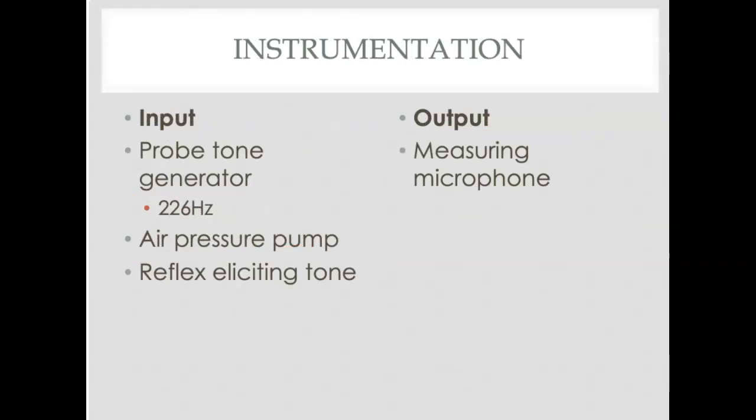The input to the system is a probe tone generator. We use a 226 Hertz tone because for adults, that's the tone that has been found to work the best. We use an air pressure pump, and then there's also an acoustic reflex eliciting tone generator. The output essentially is what we get in the microphone.